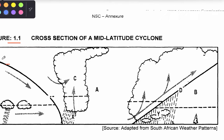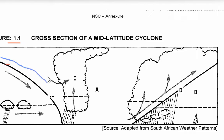The very first thing that a clever geography student would do with this cross-section is identify the fronts. Behind the system, as you can see, we have the cold front. They would draw down the cold front, and this helps when answering the questions. So behind the system, we have the cold front.